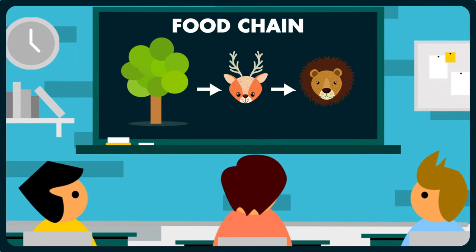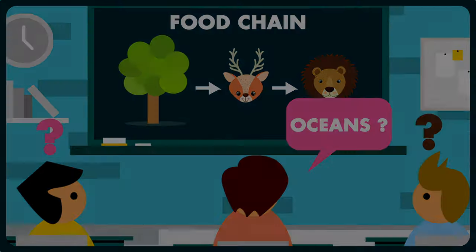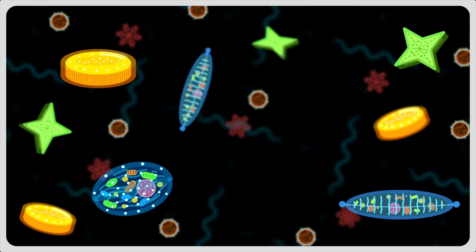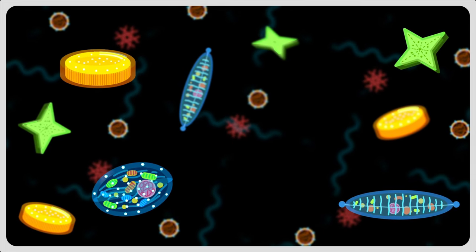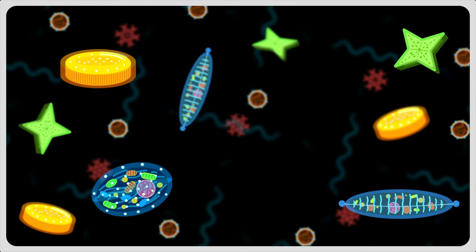But have you ever wondered how the organisms living in water get their food? Well, this big task is assigned to the small shoulders of a small group of microscopic photosynthetic forms called phytoplanktons.